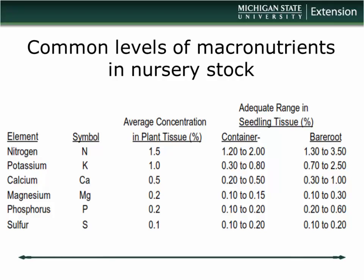Setting nitrogen aside since we've covered that separately, let's focus on the other elements. The distinction between macro and micronutrient comes down to foliar analysis. If you send samples to a lab and get percent dry weight back, macronutrients come back in terms of percent dry weight. For a conifer, you might see about 1.5–2% dry weight nitrogen, maybe 1% potassium, 0.5% calcium, 0.2% phosphorus and magnesium, and 0.1% sulfur.